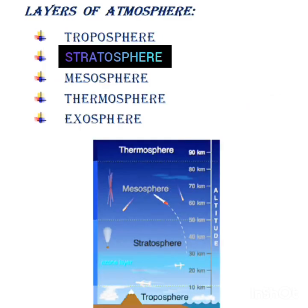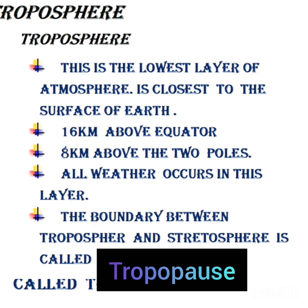Layers of the atmosphere: on the basis of composition, temperature, and other properties, the atmosphere may be divided into five layers. Starting from the bottom, the layers are called troposphere, stratosphere, mesosphere, thermosphere, and exosphere. The boundaries between these layers are referred to as pauses. We shall now discuss each of these layers in detail.